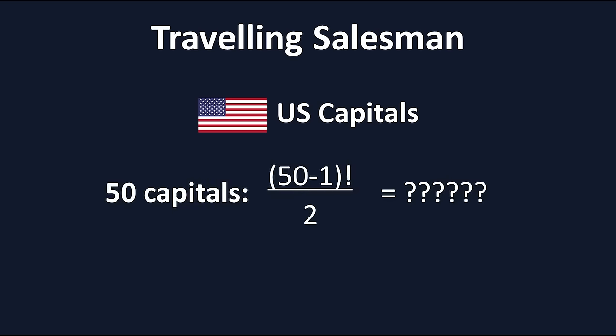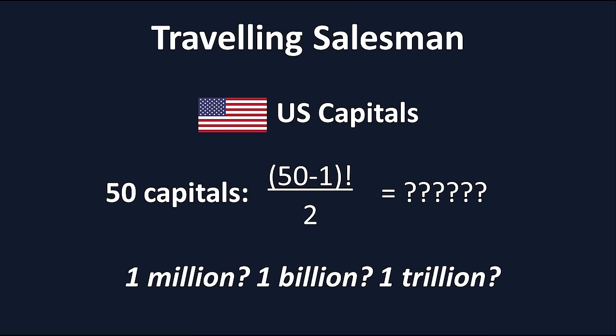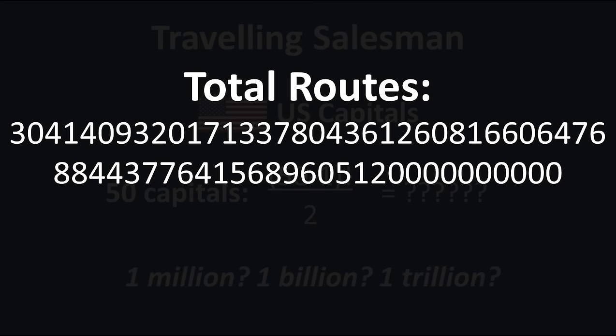Take a guess as to what the possible route count is. A few million? Maybe into the billions or trillions? Well, if you guessed anywhere near there, you're not even close, because the total number of routes is this. Yeah. And while a supercomputer might be able to calculate that one day, that's only 50 cities. Just for fun, let's say it was 1000 cities. Ready for the number?